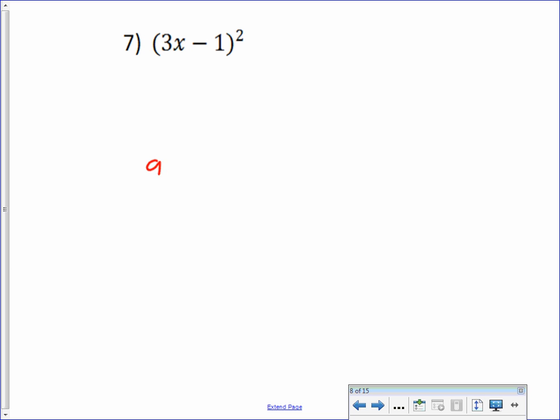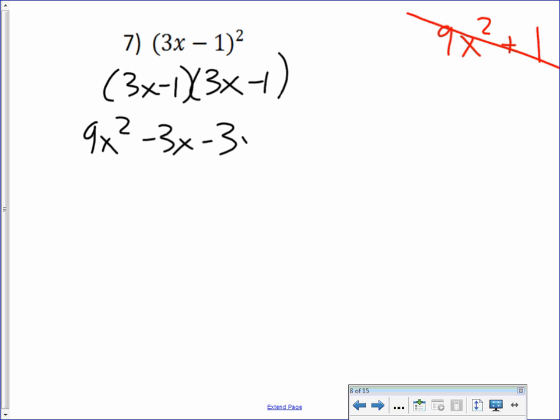Common mistake. People are going to tell me this is equals x squared plus 1. And that is incorrect, so we're just going to throw that away. So instead, we need to think that this is 3x minus 1 times 3x minus 1. And I'll get 9x squared minus 3x minus 3x plus 1 or 9x squared minus 6x plus 1.